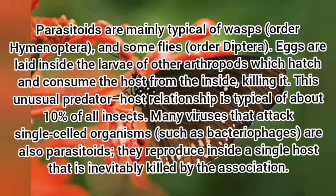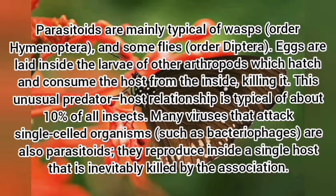Parasitoids are mainly typical of wasps (order Hymenoptera) and some flies (order Diptera). Eggs are laid inside the larvae of other arthropods, which hatch and consume the host from the inside, killing it. This unusual predator-host relationship is typical of about 10% of all insects. Many viruses that attack single-celled organisms, such as bacteriophages, are also parasitoids — they reproduce inside a single host that is inevitably killed by the association.